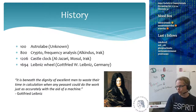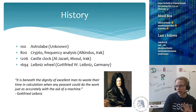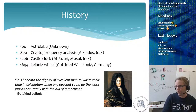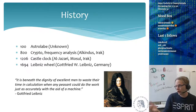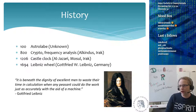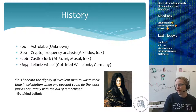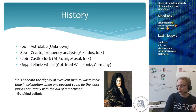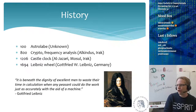In 1206 we have the castle clock, a real working clock that still exists in Mosul, Iraq — the top of science at that point in time. Then in 1694 we get the first computer-like system: the Leibniz Wheel. I include it because I'm in Germany. Gottfried Leibniz was a famous mathematician, and his quote is: 'It is beneath the dignity of excellent men to waste their time in calculation when any peasant could do the work just as accurately with the aid of a machine.'